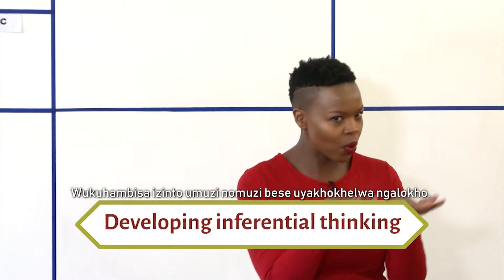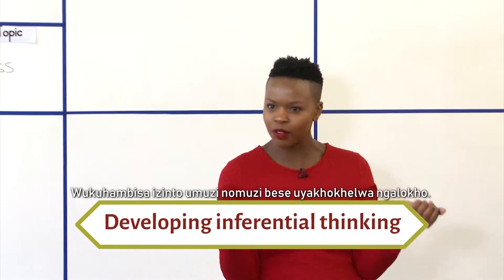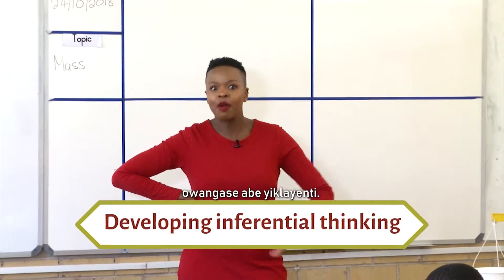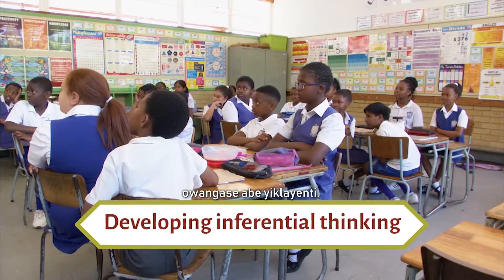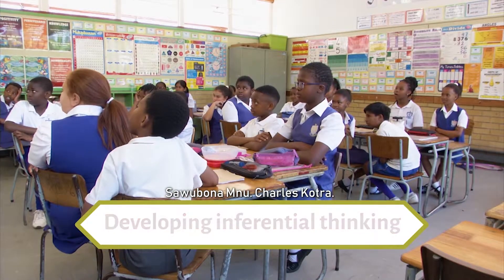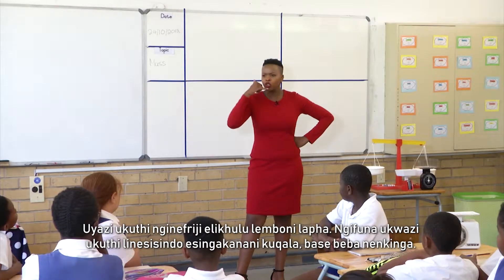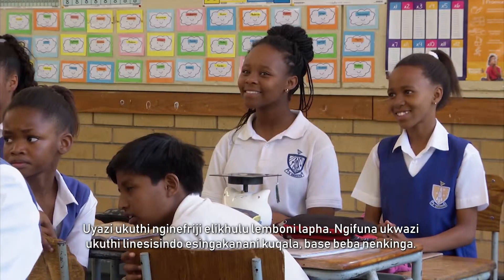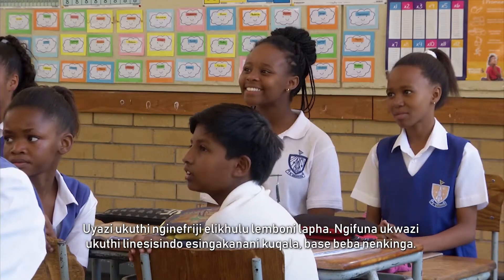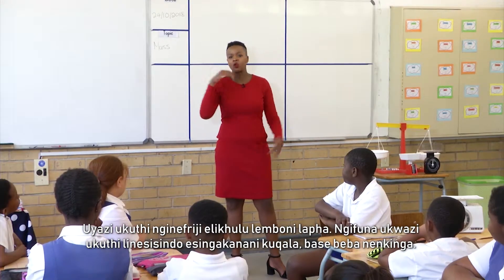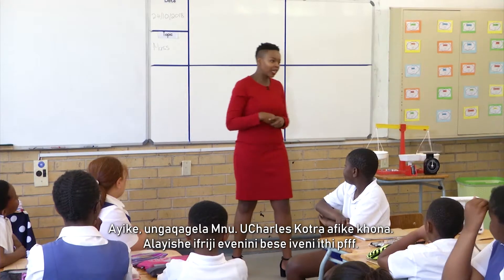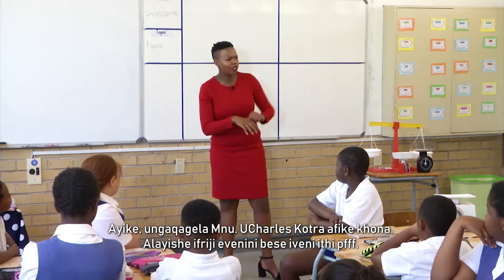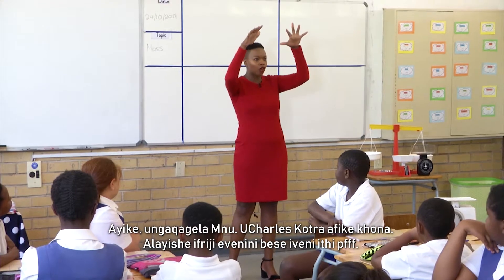He delivers things from door to door and he got paid for it. So one day he receives a call from a potential client. Hello, Mr. Charles Cottrell, I've got this huge industrial fridge here. I need to know how much it weighs first. And they had a predicament — well, you can guess it. Mr. Charles Cottrell gets there, he loads the fridge onto the bucky, and the bucky goes...